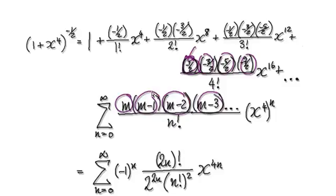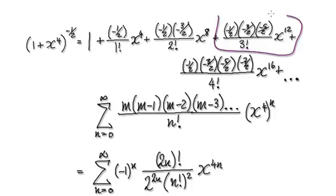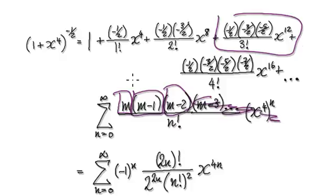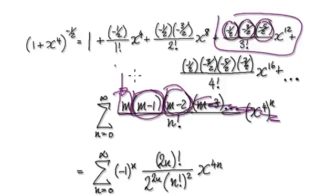If you want n equals 3, you would need to count 1, 2, 3, and then it will be a negative half, and then negative half take away 1, and then negative half take away 2 — that gives you this and so on.